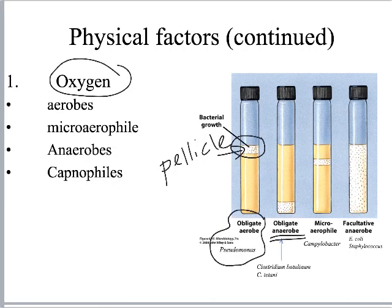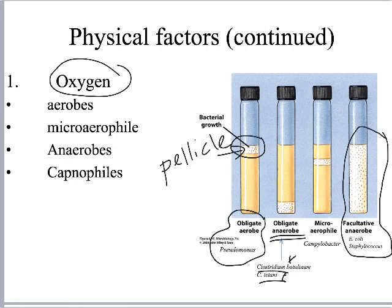Obligate anaerobes must be in an oxygen-free condition. Examples include Clostridium species — Clostridium botulinum causes botulism (food poisoning) and is found in canned food, while Clostridium tetani causes tetanus and is found in the soil. A facultative anaerobe can function with or without oxygen — examples include E. coli and Staphylococcus, which can grow in the oxygen-poor intestines or in oxygenated environments, so growth appears throughout the test tube. A microaerophile, such as Campylobacter found in the gut, prefers small to medium amounts of oxygen.